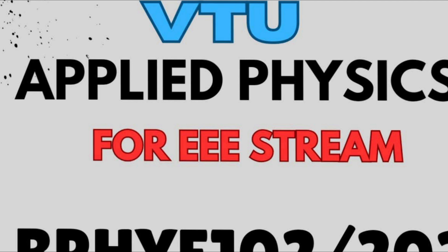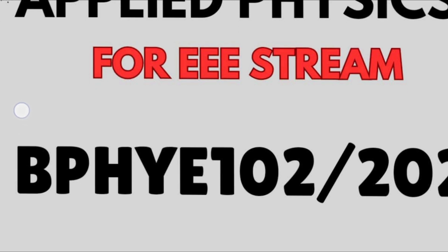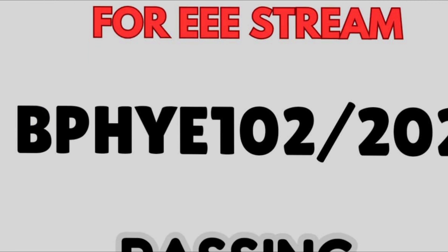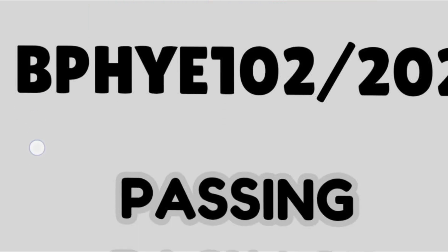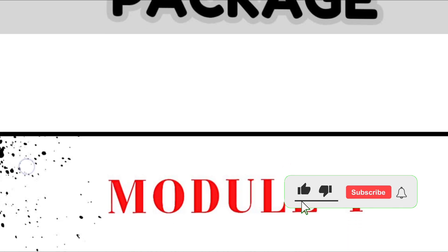So today I am with the passing package of your subject Applied Physics. Subject code is BPHYE102 or 202. So probably you are in the first semester right now if you are the new batch student. So this video is for you to make sure you will not skip it. I will discuss the super important questions or I can say the passing package for your examination. You can easily pass the physics subject by this much portion.